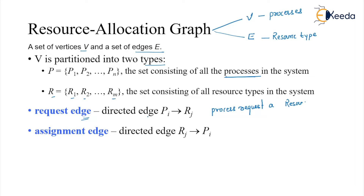When a process requests a resource, there will be a directed edge from Pi to Rj — that is the request edge. For an assignment, the direction is the opposite: Rj to Pi, meaning the resource is allocated to the process.